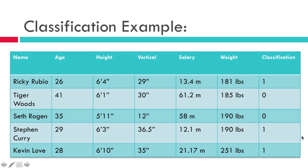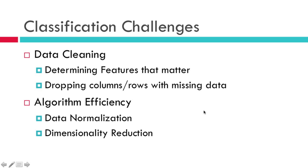Yes, there it is. This person is Kevin Love — super tall dude, super heavy. We can see that was a pretty accurate classification, but we're doing a very small number of data points, and I cheated because I already knew, since I made this PowerPoint.